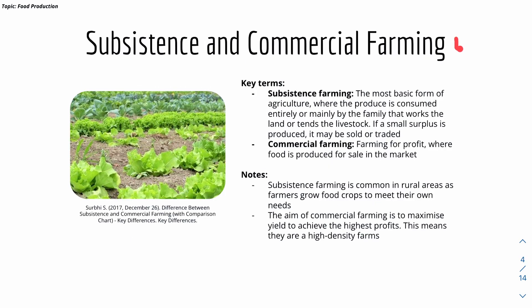Subsistence farming is the most basic form of agriculture where produce is consumed entirely or mainly by the family that works the land. It is small-scale and local, common in rural areas where farmers grow food crops just to meet their own needs. Commercial farming is the opposite — farming for profit on a large scale, common in urban areas, aiming to maximize yield for highest profit, typically using high-density farms.